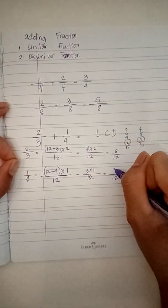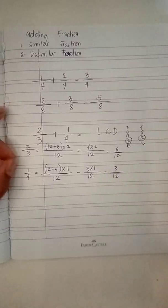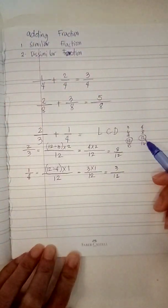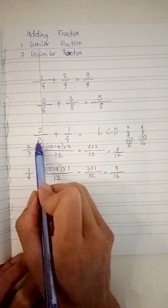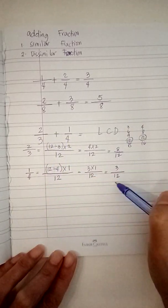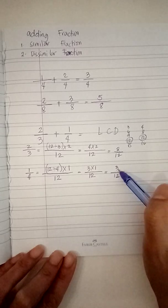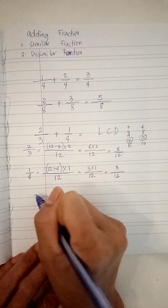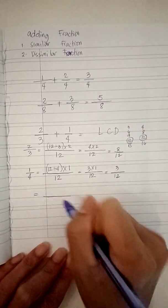So now, we can add the eight over twelve plus three over twelve. We'll see here, eight, twelve, which is the two-thirds...